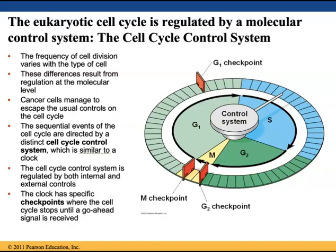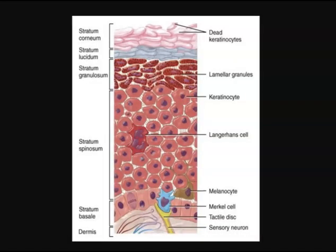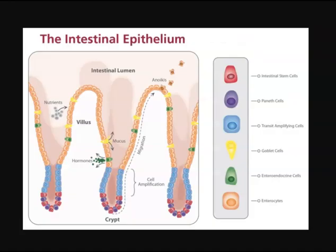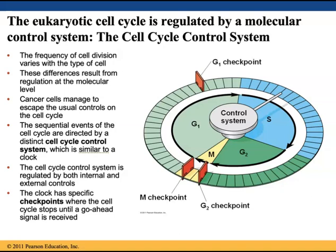The eukaryotic cell cycle is regulated by a molecular control system called the cell cycle control system. The frequency of cell division varies with the type of cell — for example, cells in the skin and those lining the intestinal epithelium of your GI tract are the fastest dividing cells in the human body. These differences result from regulation at the molecular level. The sequential events of the cell cycle are directed by a distinct control system similar to a clock, with specific checkpoints where the cell cycle stops until a go-ahead signal is received. We see three distinct checkpoints in the image.